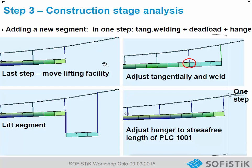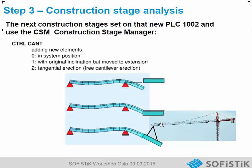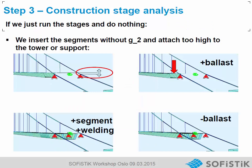The four steps that run in one step are: lift the new segment, adjust it tangentially, weld it together, and then adjust the hanger to the pre-calculated unstressed length. This can be done in one step — insert the element and insert the hanger with the correct position and correct length. When we insert an element, it is inserted stress free, as if hanging on a crane or lying on formwork, in the tangential system control cantilever 2.